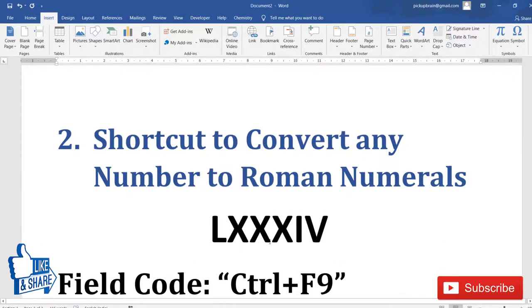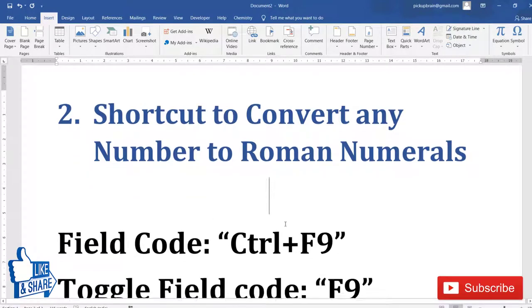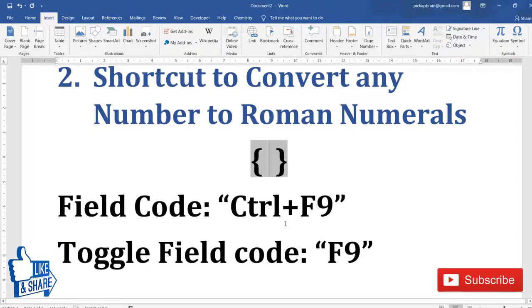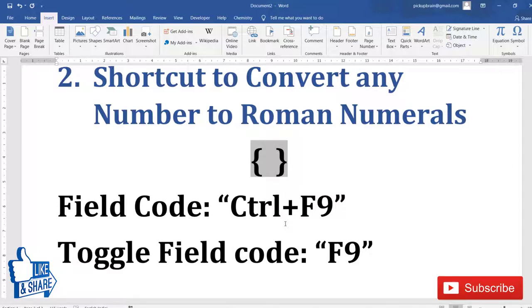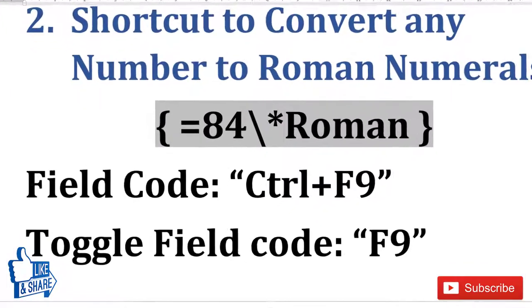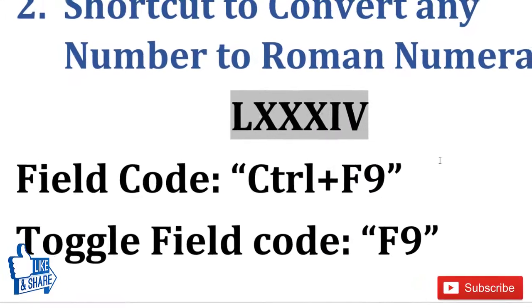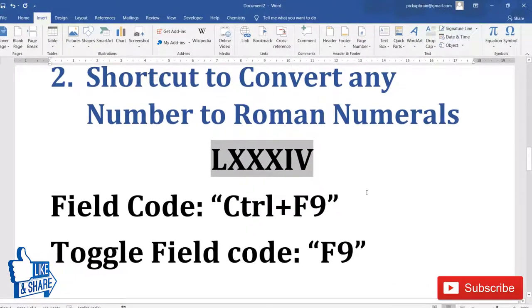Second thing: you can convert any number into Roman numerals using a shortcut trick. First, you have to get field code. This shortcut works only inside field code. Shortcut to get field code is Ctrl+F9. These curly braces are different from regular curly braces. Type equal to and the number you want to convert, for example I'll type 84, then backslash asterisk roman. This is the complete shortcut. To get the Roman numeral, right-click in this field code and click Update Field, or use F9 which is a shortcut for Update Field.